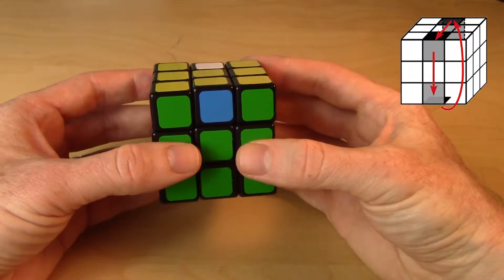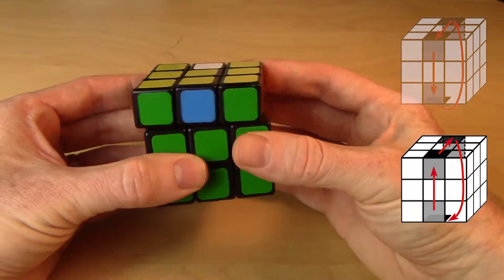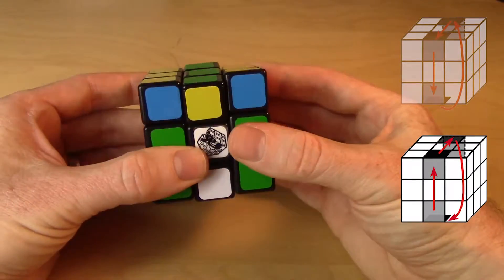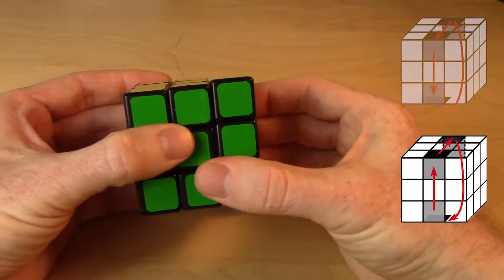So if we want to do it in reverse, instead of doing the middle slice first, I double tap the top, and then do the middle slice, and that does it in the opposite direction.